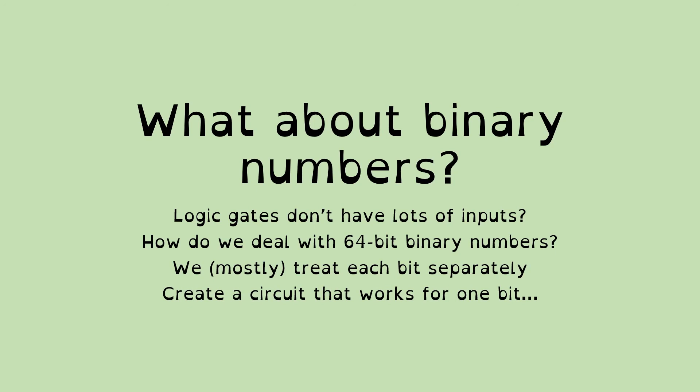So what we generally do is we create a circuit that works for one bit of our binary number, and then we replicate that for as many different copies as we need so that we can deal with, say for 64-bit binary numbers, we'll need 64 copies of that. When we're considering it and drawing diagrams for it, we often just draw the diagram for one bit and say, make a note somewhere saying we need 64 of these. And that's fine.